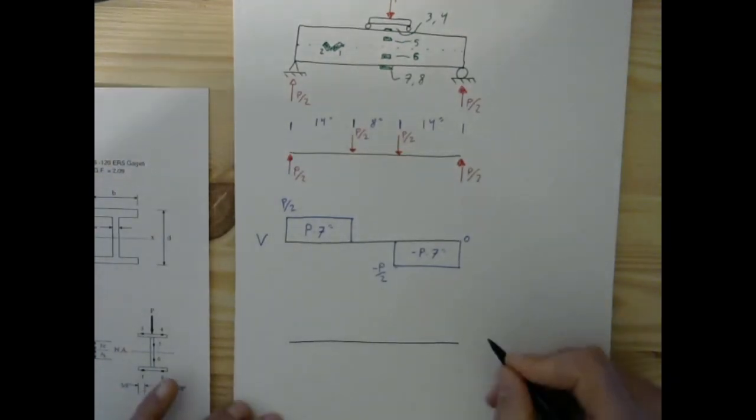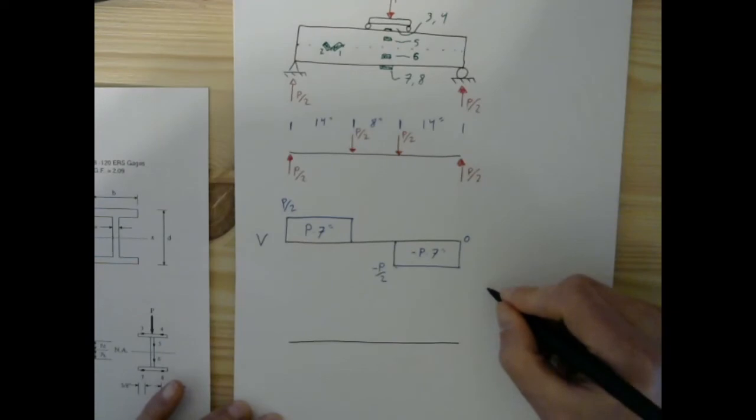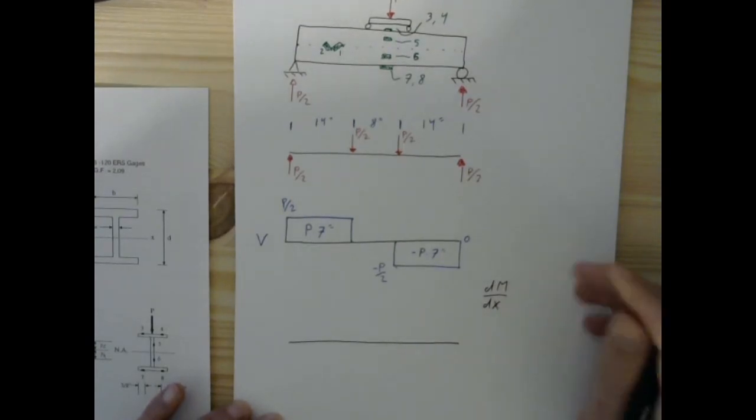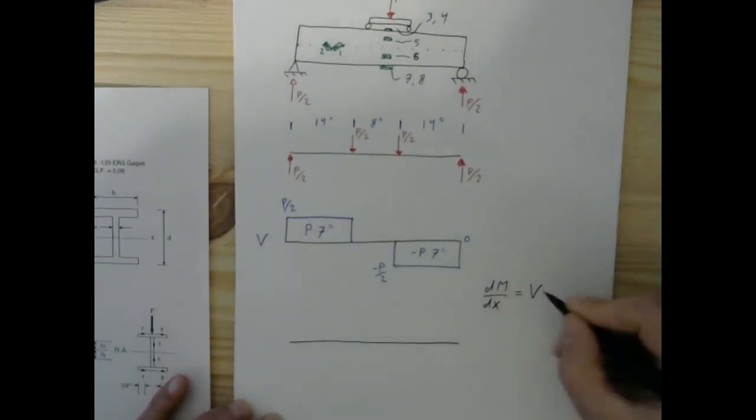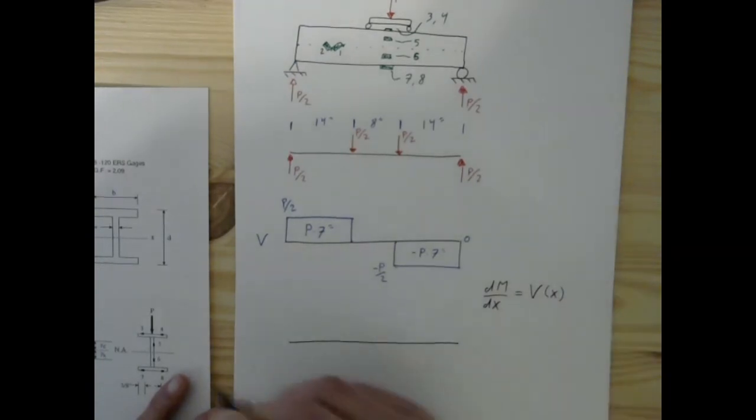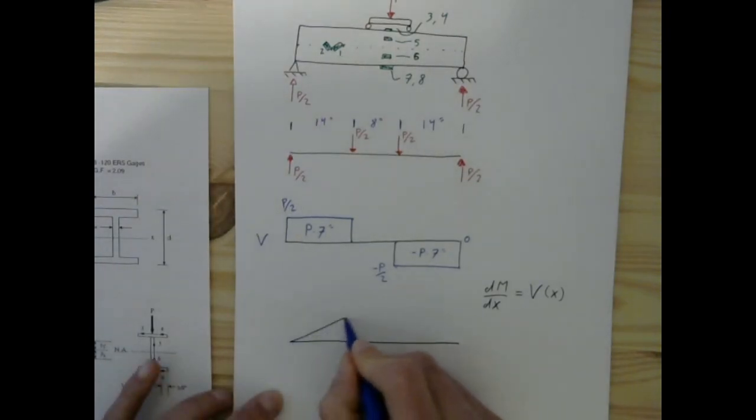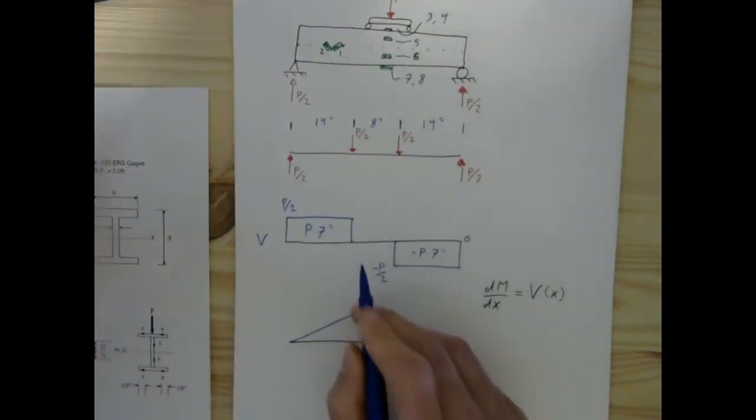When we're considering the moment it may be useful to consider the equation we have for the derivative of the moment function, which is that dM/dx is going to be equal to the shear function, which in this case is going to be a constant P over 2 from the beginning until that load is applied.